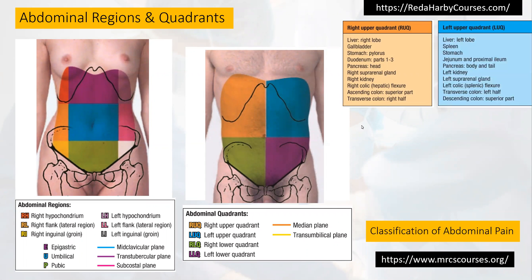For the left upper quadrant, don't forget the spleen, the pancreas — body and tail — the stomach, the left suprarenal gland and left kidney, the splenic flexure, descending colon, and part of the transverse hemicolon.